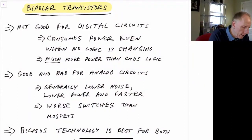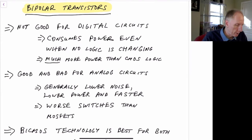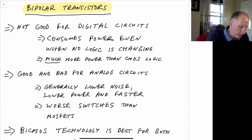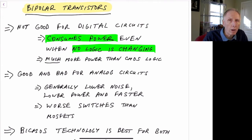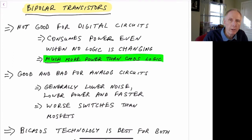Bipolar transistors in general are not very good for digital circuits. The main reason is that they consume power even when no logic is switching. That's not the case in CMOS logic — if all states are constant and there are no transitions or clocks moving, there's no power being consumed. In bipolar logic that would not be the case, so you'd be consuming much more power than a CMOS logic circuit.